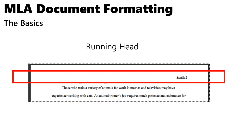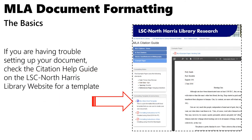All pages should include a running head that includes your last name and the current page number. You can edit the header in Microsoft Word by double-clicking the header area. In the Design tab, you can insert a page number at the top of the page and then add your last name. When you're done editing, click 'Close Header and Footer.' If you're having trouble setting up your document, check the citation help guide on the LSC North Harris Library website for a template — I'll have the link at the end of the presentation and in the comments section.